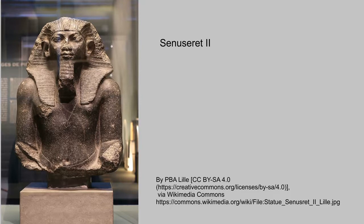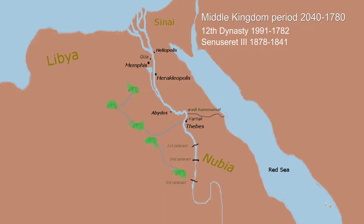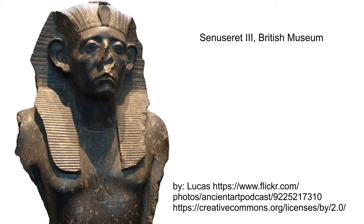Senusret the Second was also very noted for his pyramid, which had trap doors and false passages and was unique for its time. His son Senusret the Third was the greatest king of the 12th dynasty. According to Manetho, quoted by Josephus, this pharaoh was very tall — over six feet six inches. He was also a great warrior. Senusret the Third is known for his face being very natural and solemn — the pharaohs before him were very godlike but lifeless, whereas Senusret the Third's face is very lifelike, a very notable change.